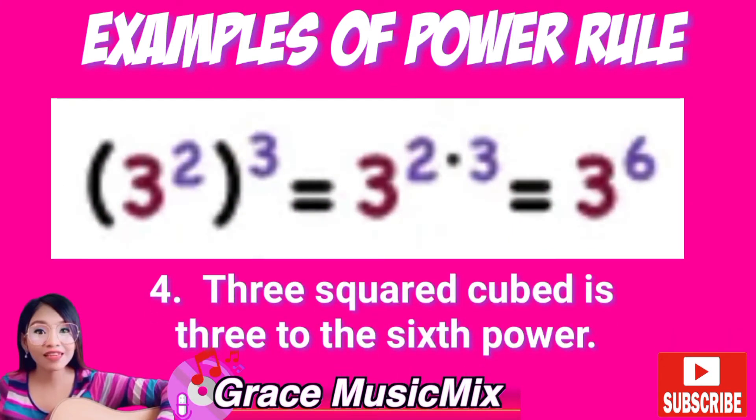Example number four: three squared cubed is equal to three raised to two times three, which is three to the sixth power.